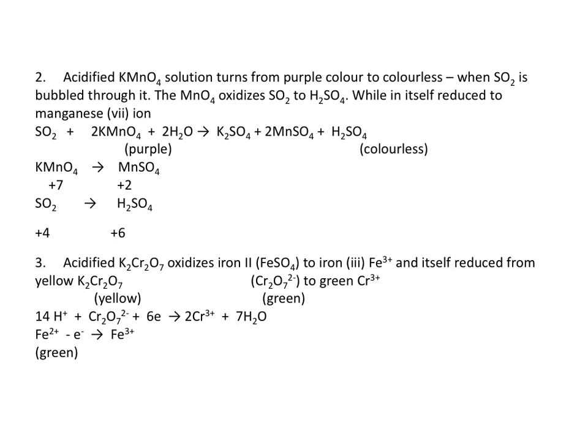Acidified KMnO₄ solution turns from purple to colorless when SO₂ is bubbled through it. The MnO₄⁻ oxidizes SO₂ to H₂SO₄, while it itself is reduced to manganese(II) ion. The equation is: SO₂ + 2KMnO₄ + 2H₂O → K₂SO₄ + 2MnSO₄ + H₂SO₄. KMnO₄ has a purple color, but when it reacts with SO₂, MnSO₄ and H₂SO₄ are formed, which are colorless.